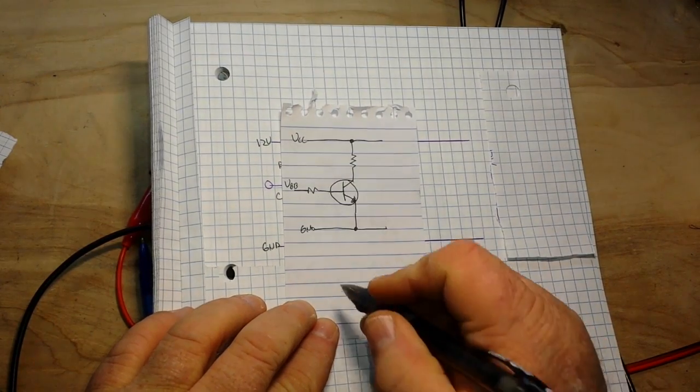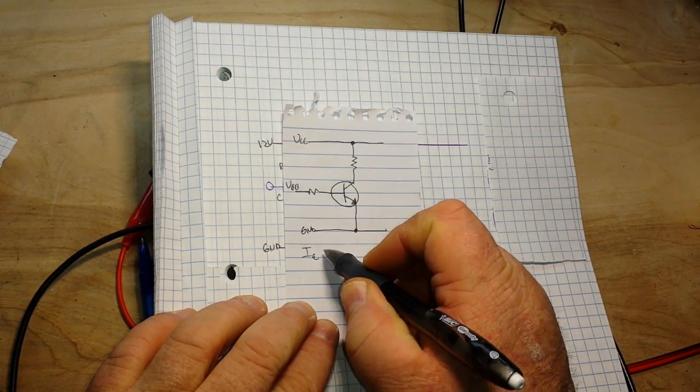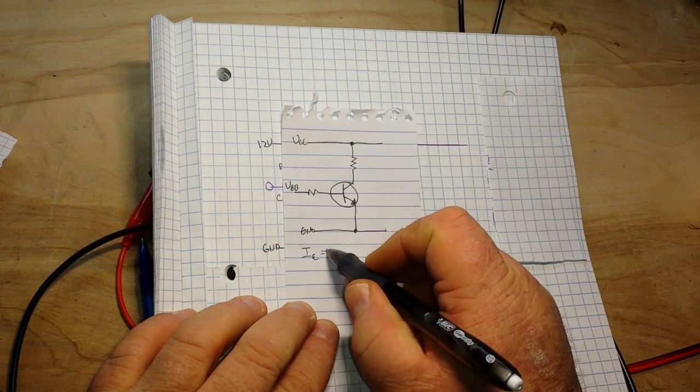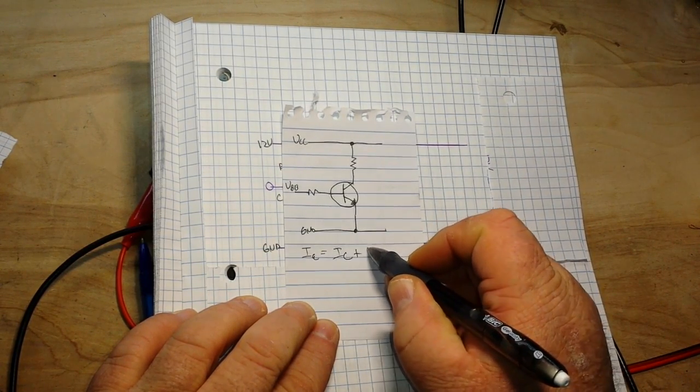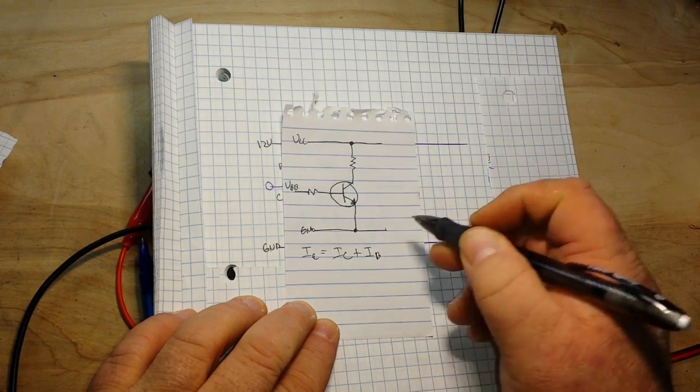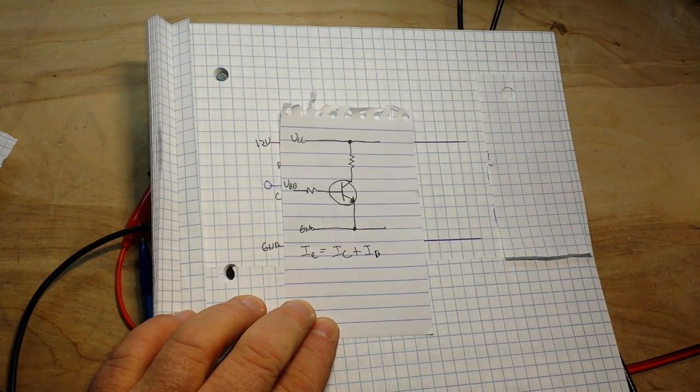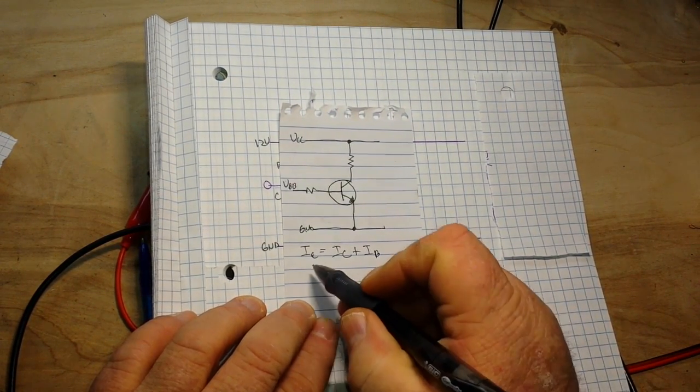I'm going to gloss over it really quickly, we're not going to get too tight into this, but we can say that the current at the emitter has to equal the current at the collector plus the current at the base. That's Kirchhoff's law - all the currents must sum up.